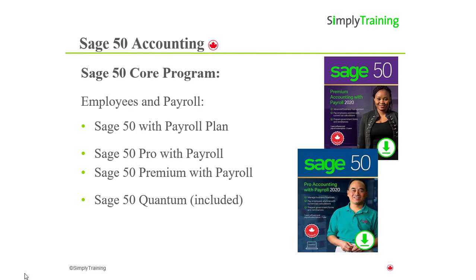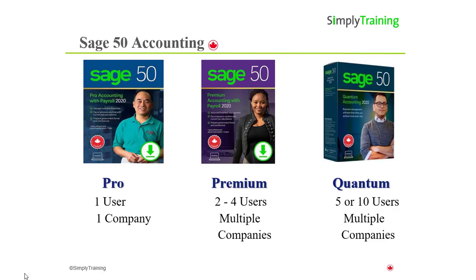Now that we know what Sage 50's core features are, let's look at the distinct differences between the Pro, Premium and Quantum programs and the Sage 50 Cloud subscriptions. Starting with Sage 50 Pro, this is a starter program and is perfect for a small sole proprietorship business like a subcontractor or services business, and it is widely used for non-profit organizations. The Sage 50 Pro license is one user and for one company. The next level is the Sage 50 Premium program. It is multi-user and comes in two or four user licenses. For example, if the company has a bookkeeper and an office assistant, both can work in the company recording transactions at the same time.